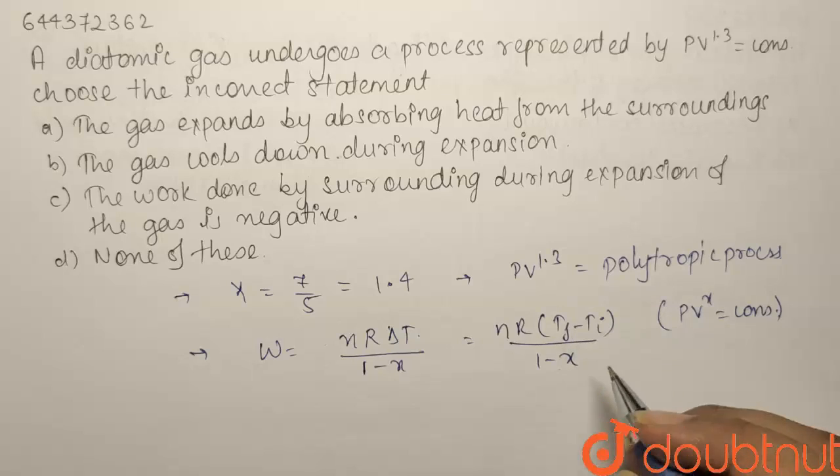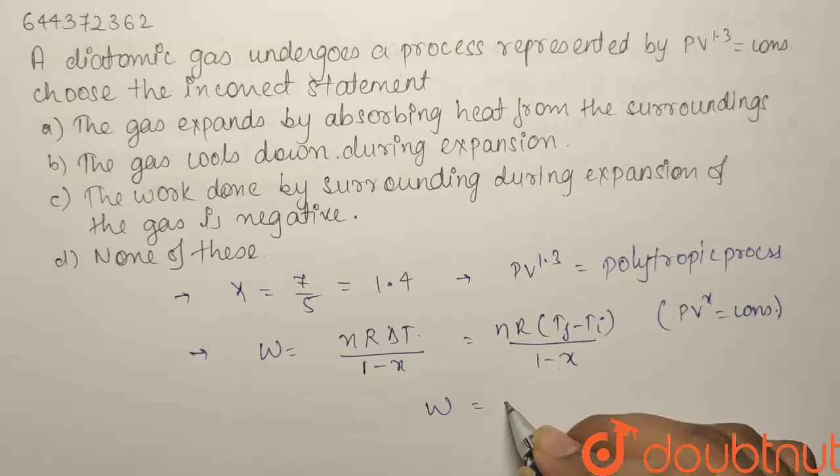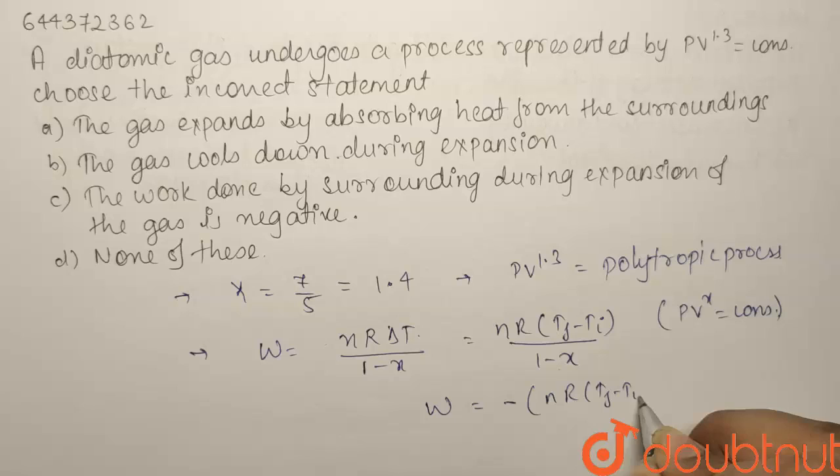Here our X is 1.3. So, if you put X equals to 1.3, work will be equals to minus of nR Tf minus T initial upon 0.3.